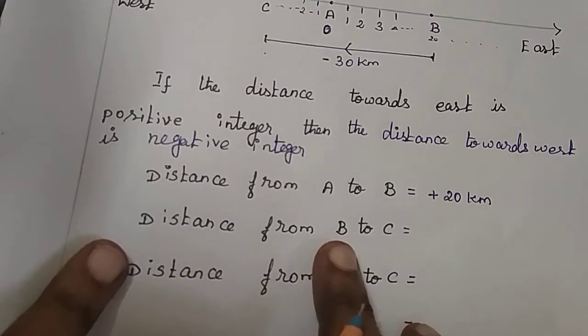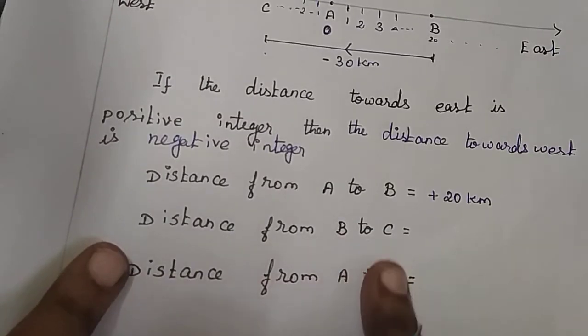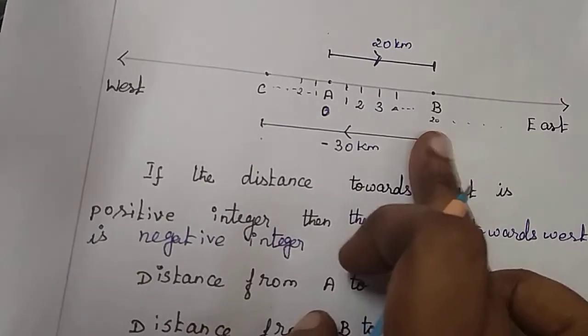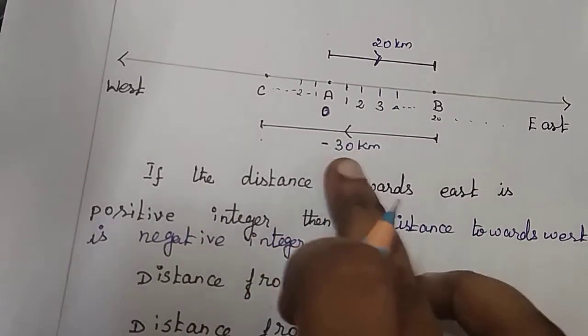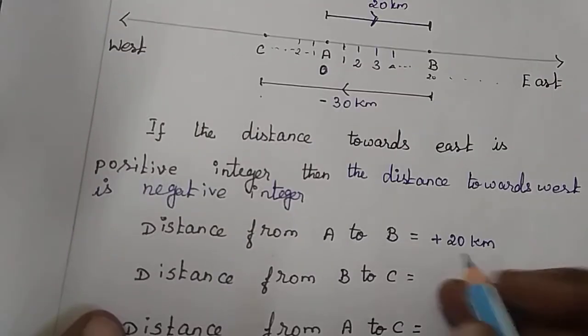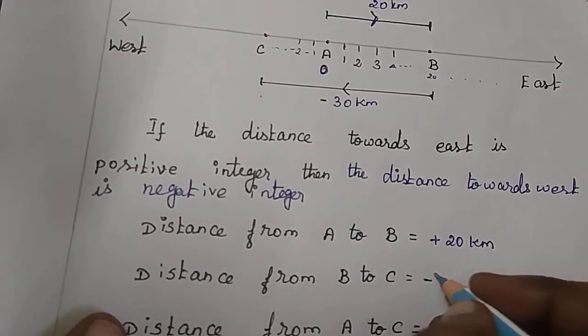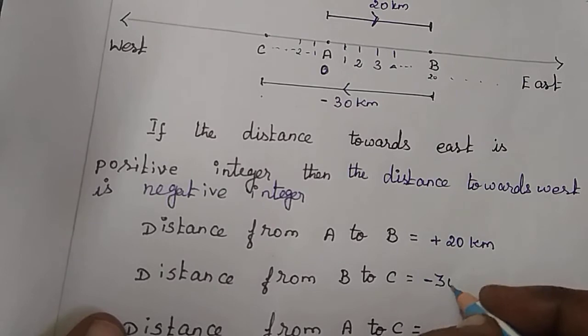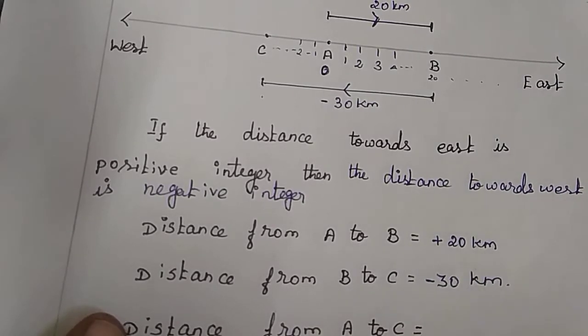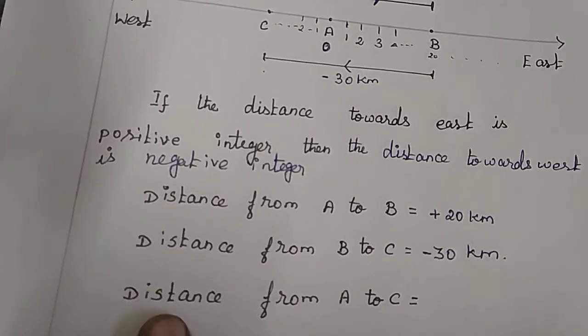Distance from B to C is minus 30 kilometers, because the opposite direction has a negative integer.